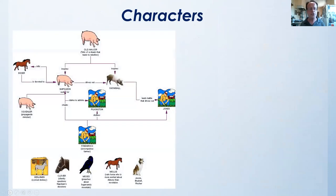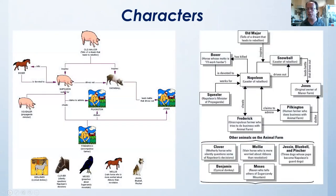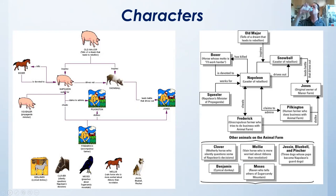As far as characters, we have several characters, but we can really classify them as either animal characters or human characters. The human characters tend to represent other societies or other forms of government outside of communist Russia, but they also represent the czar, who was the former leader of Russia before the Soviet Union. You have characters like Napoleon, who represents Stalin. You have Squealer, who really represents Pravda, which was the newspaper of the Soviet Union and other propaganda outlets. And you have animals like Moses, who represents the Russian Orthodox Church. These slides have some interesting connections between the different characters and how they relate to each other.